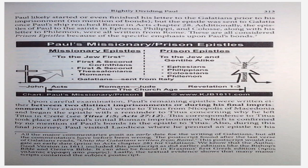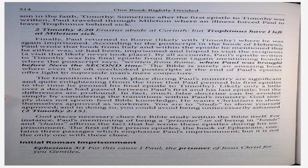Upon careful examination, Paul's remaining epistles were written either between two distinct imprisonments or during his final imprisonment. For example, Paul wrote to Titus from Nicopolis of Macedonia and began the epistle with a reminder to Titus concerning why he left Titus in Crete — see Titus 1:5, Acts 27:12. This correspondence to Titus took place after Paul's initial Roman imprisonment, which is confirmed by no mention of Paul's bonds in the epistle to Titus. Also during this final journey, Paul visited Laodicea where he penned an epistle to his son in the faith, Timothy. Sometime after the first epistle to Timothy was written, Paul traveled through Miletum where an illness forced Paul to leave Trophimus behind sick — 2 Timothy 4:20: Erastus abode at Corinth, but Trophimus have I left at Miletum sick. Finally, Paul returned to Rome, likely with Timothy, where he was again in prison.